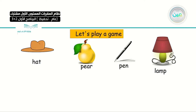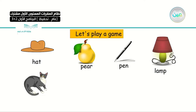The game is: change one letter in the word to make a new word. For example, hat — change one letter and produce a new word with a different meaning. If you change the H into C, it's going to be cat.